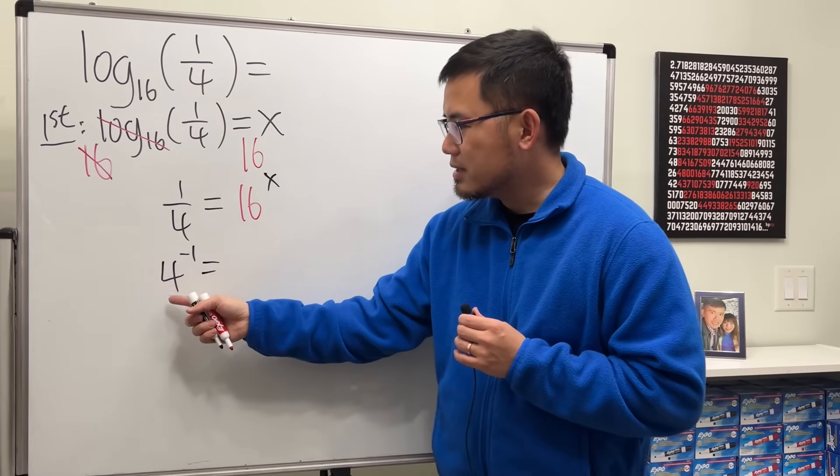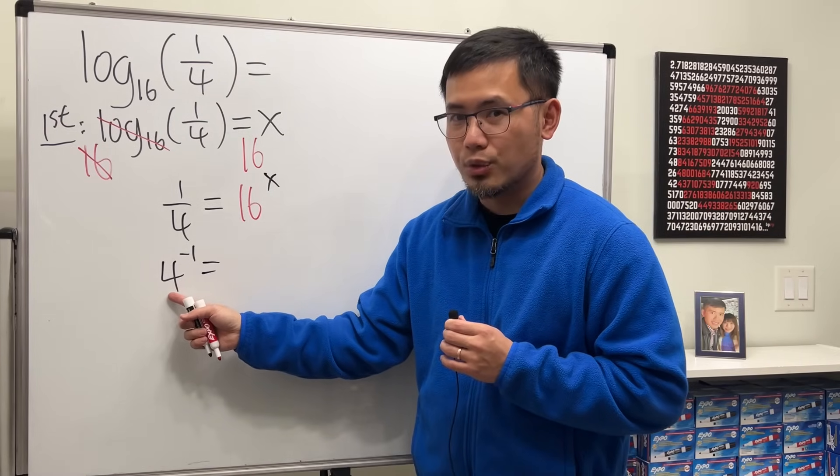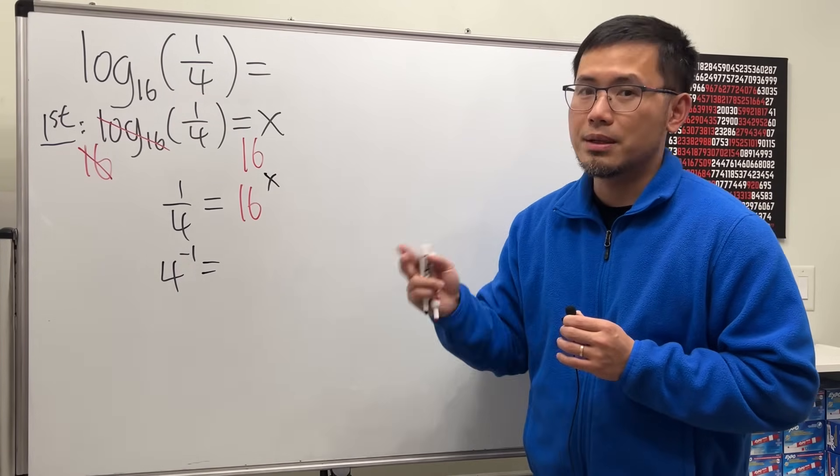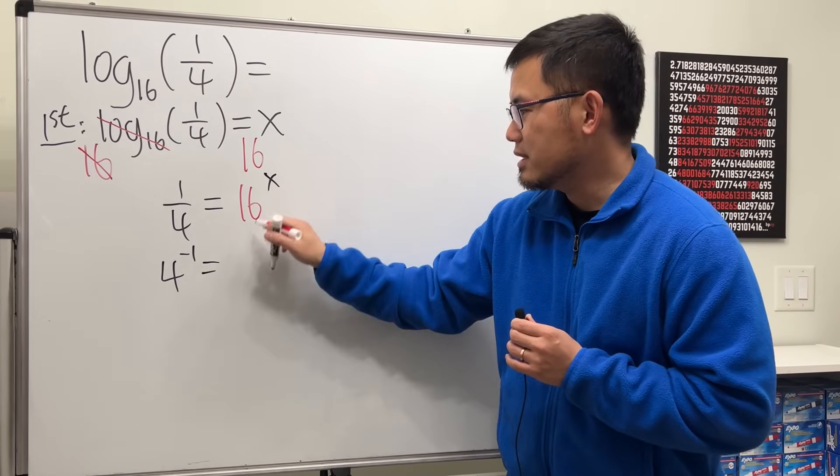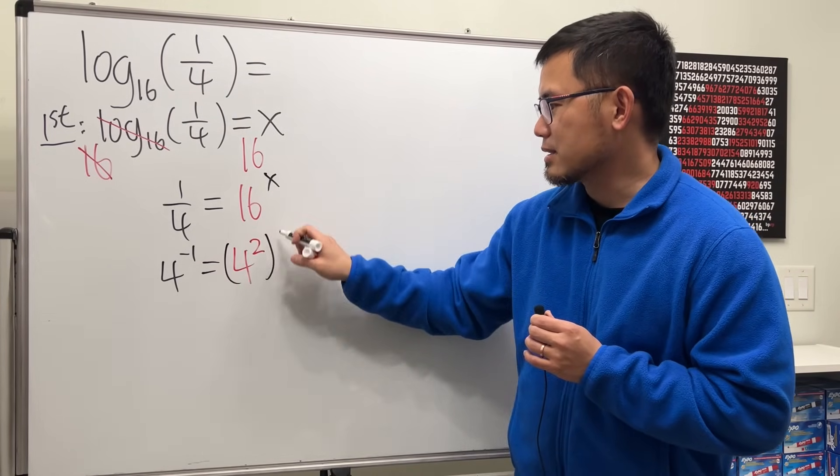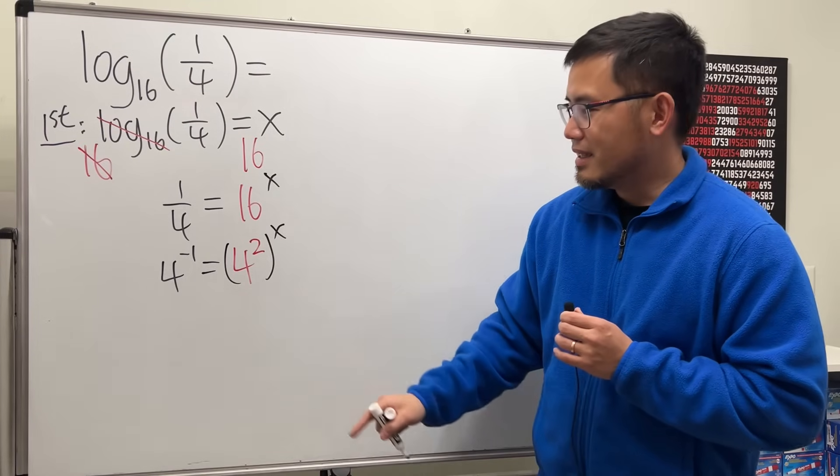Because the left hand side we have 4 for the base already, so for the 16, let's look at that as 4 times 4, which will give us 4 squared, and then raise that to the x power.